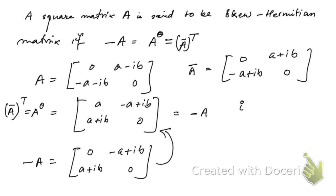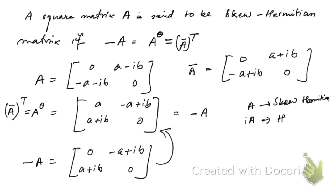An important property: if you multiply a skew-Hermitian matrix A by i, you get a Hermitian matrix. That is, if A is skew-Hermitian, then iA is Hermitian.